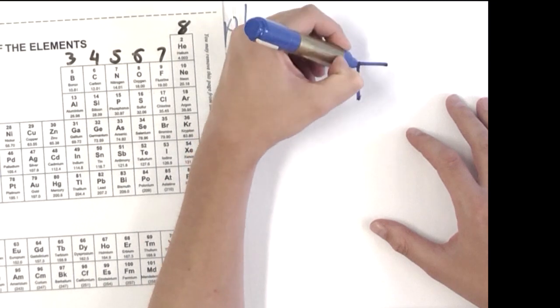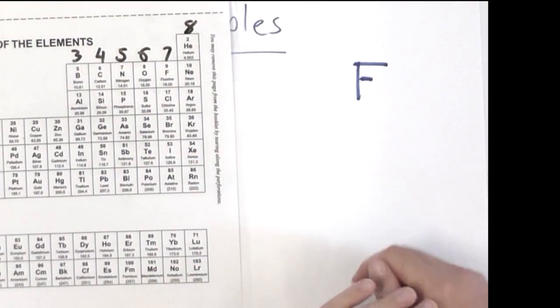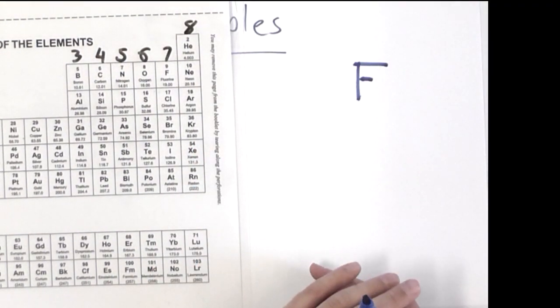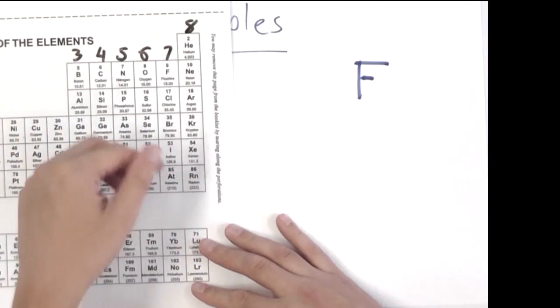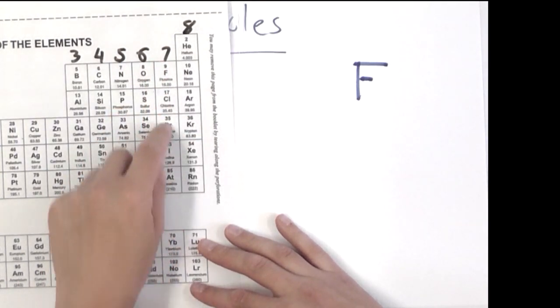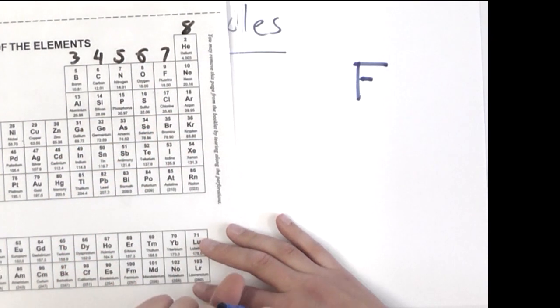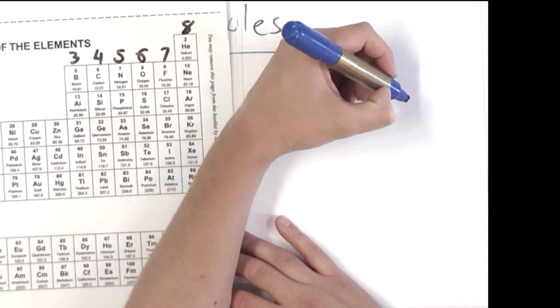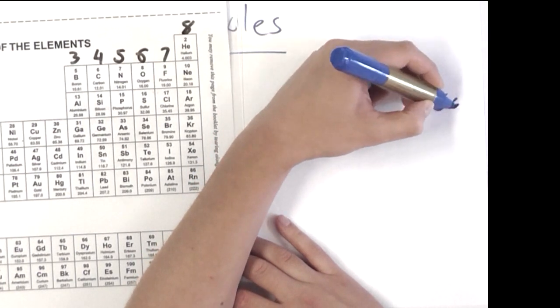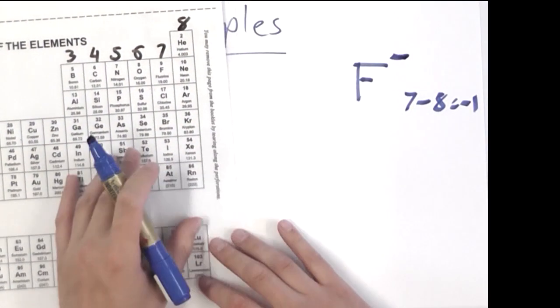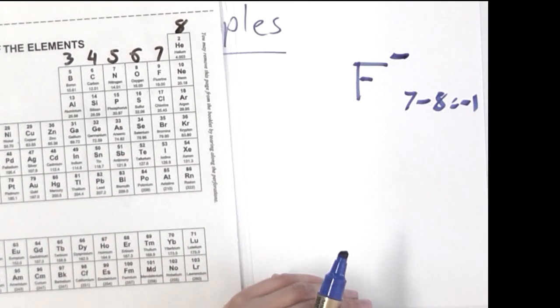Let's do fluorine. To figure out the charge of fluorine when it forms an ion, we need to do the group number minus 8. So I find fluorine on the periodic table. It's in group 7 here. And then I need to take 8 away from that. So 7 take 8 equals minus 1. So the charge on a fluoride ion is going to be minus 1.